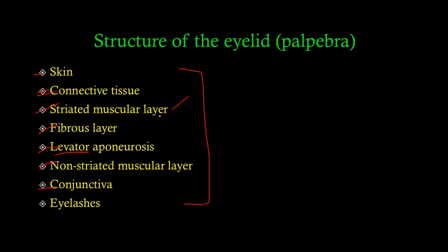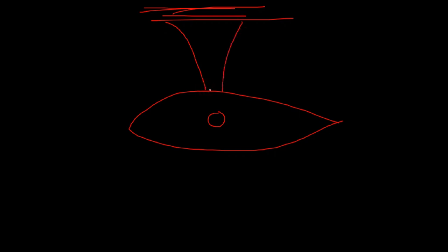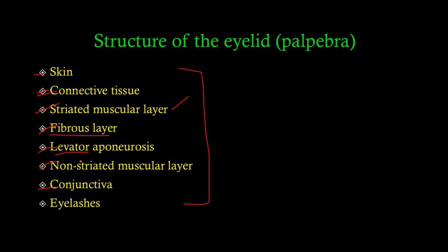Then there's the fibrous layer, whose main component is the tarsal plate — we'll discuss that shortly. Then there is the levator aponeurosis. An aponeurosis is basically a flattened tendon. The levator muscle, located up towards the forehead, extends its aponeurosis down, and when it contracts it pulls the eyelid up — that's how we open our eyes. It's the levator palpebrae. After that is a non-striated muscular layer, then the conjunctiva, which we'll cover in the next lectures.